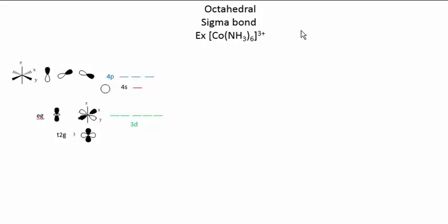This video is going to review bonding in transition metal complexes that you had in previous courses. We're going to start with octahedral complexes and look at sigma bonding. An example may be cobalt with six ammonias.